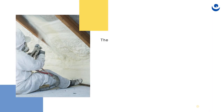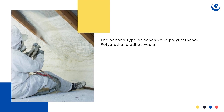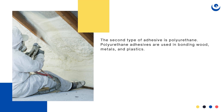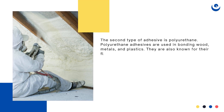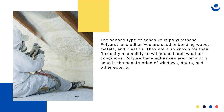The second type of adhesive is polyurethane. Polyurethane adhesives are used in bonding wood, metals, and plastics. They are also known for their flexibility and ability to withstand harsh weather conditions. Polyurethane adhesives are commonly used in the construction of windows, doors, and other exterior applications. The adhesive creates a strong bond that can last for many years.